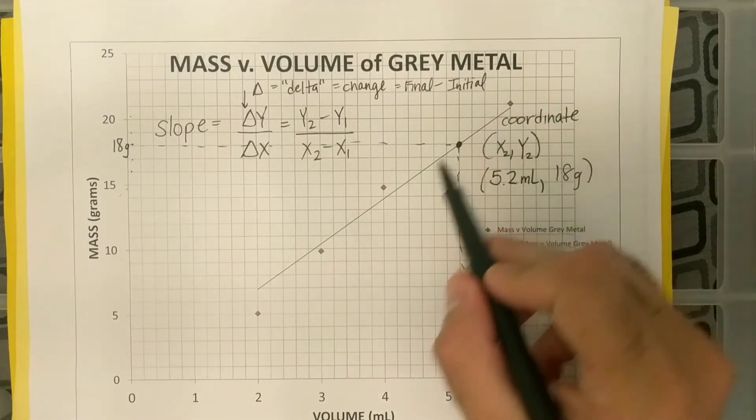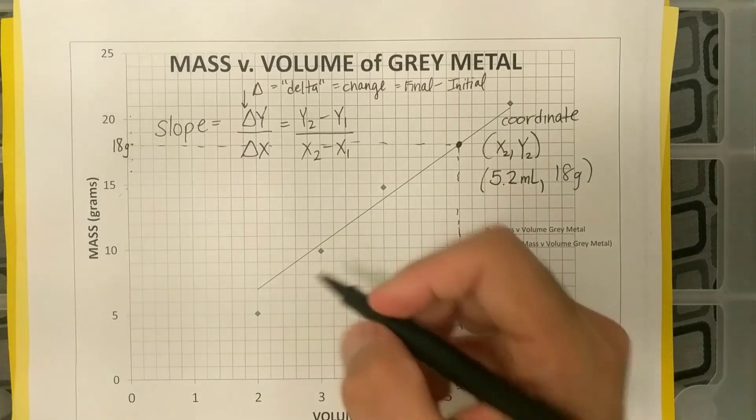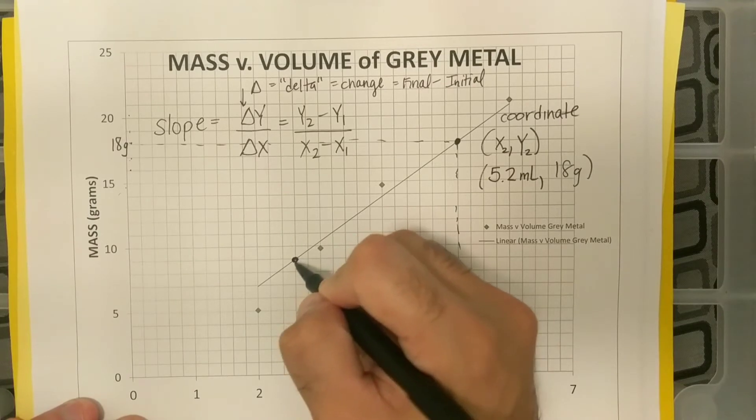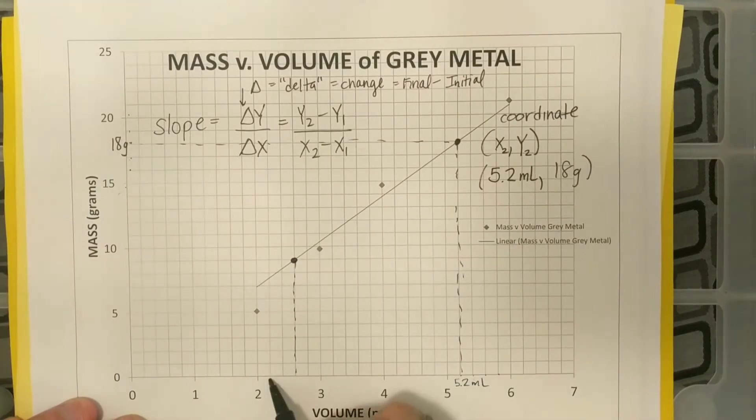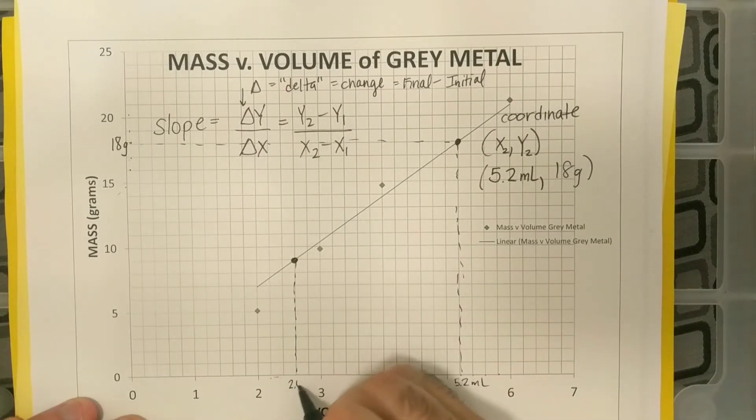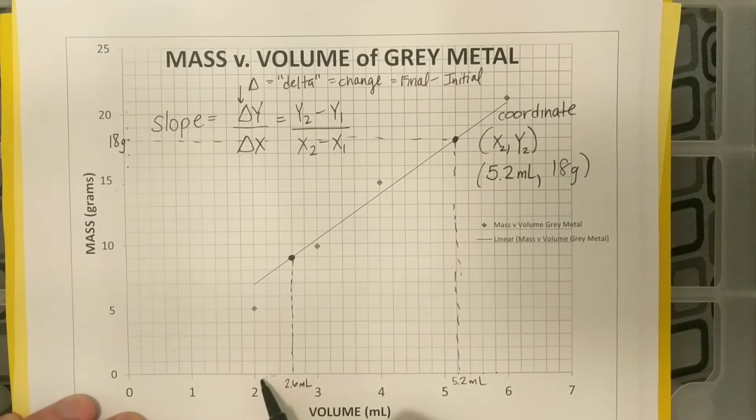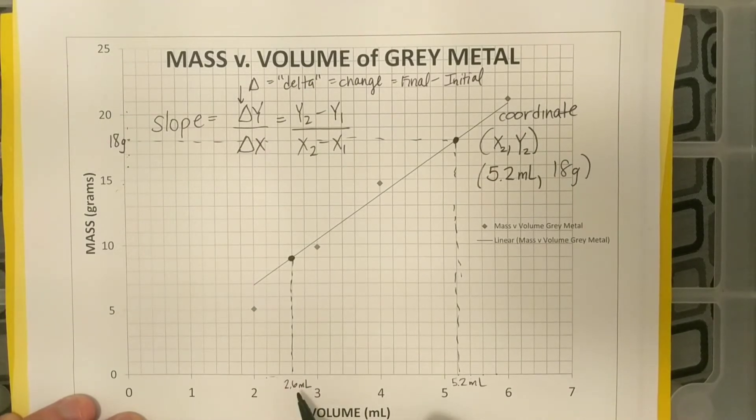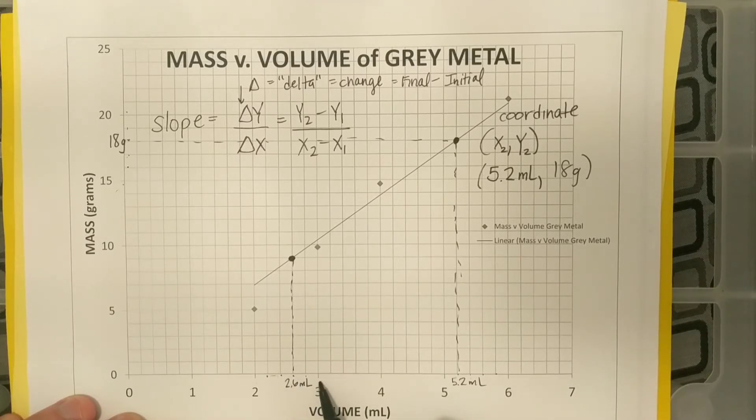Now let's find another point on this graph that looks kind of easy to tell and is directly on the line. I found another one down here. And it looks like it is at 2.2, 2.4, it looks like it's at 2.6 milliliters, right? And again, there were four lines in between the two and the three, so 2, 2.2, 2.4, 2.6, 2.8, 3.